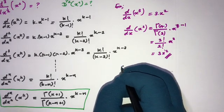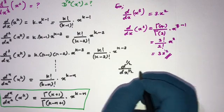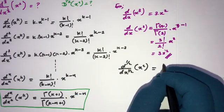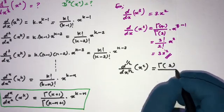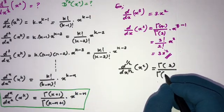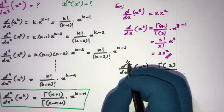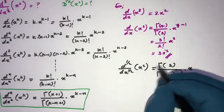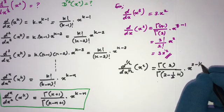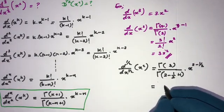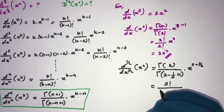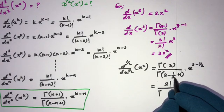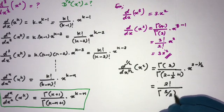Now we can take the half derivative of x squared. With k=2 and n=1/2, we apply the formula: gamma(k+1) over gamma(k minus n plus 1) times x to the k minus n. This gives gamma(3) over gamma(2 minus 1/2 plus 1) times x to the 2 minus 1/2, which is gamma(3) over gamma(5/2) times x to the 3/2.